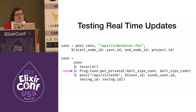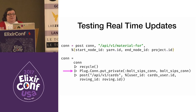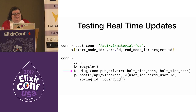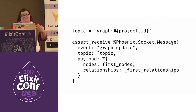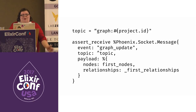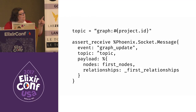Testing this was kind of a pain. To test the real-time updates, we hit multiple controllers to simulate creating relationships over time. Each request to the controller needed us to add the Bolt Sips connection to the controller, as it got stripped off the connection each time — manually putting it in made it work. I also found I couldn't use assert_push because I couldn't specify the topic when using it; interpolating the topic gave a compile error of 'cannot invoke remote function project ID inside match'. Instead, by using assert_receive I was able to get around that and still specify the topic.